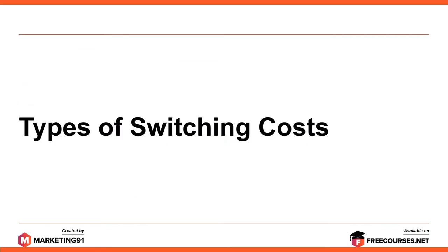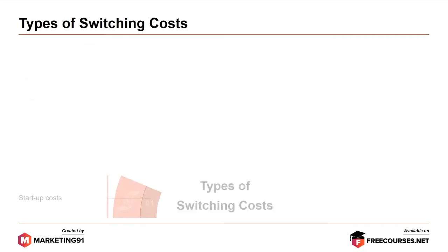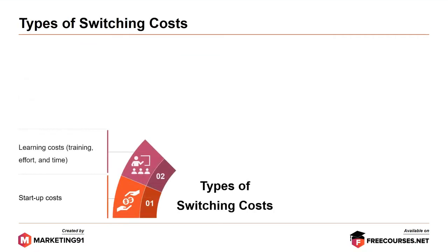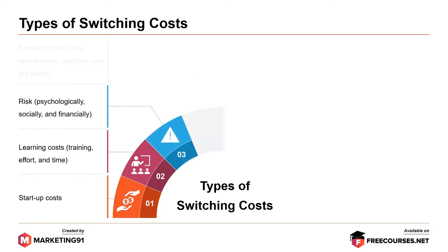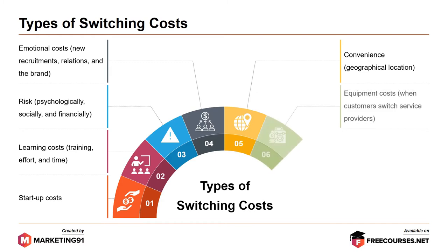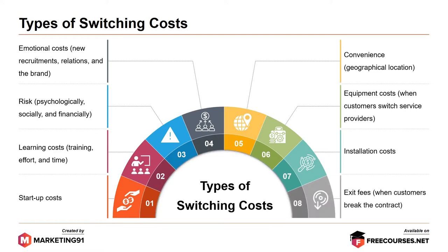Now let's look at the types of switching costs. First, startup cost. Second, learning cost. Third, risk — i.e. psychologically, socially and financially. Fourth, emotional cost, as in new recruitment relations and the brand. Fifth, convenience, as in a geographical location. Sixth, equipment cost, when customers switch service providers. Seventh, installation cost. And finally, exit fees, if customers break the contract prematurely.